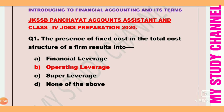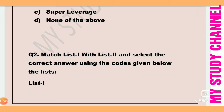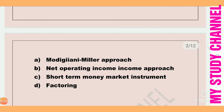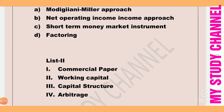Next question: Match list one with list two and select the correct answer using the codes given below. List one includes: A is Modigliani-Miller approach, B is net operating income approach, C is short-term money market instrument, D is factoring. List two: commercial paper, working capital, capital structure, and arbitrage.